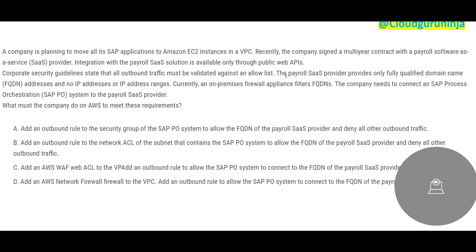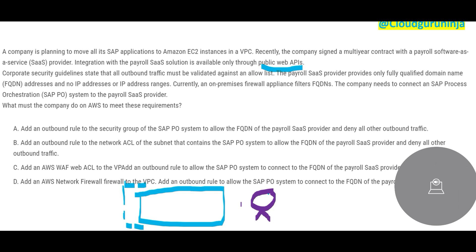Next question: a company is moving all their SAP applications to AWS EC2, and obviously it has to be inside a VPC. There is a third-party payroll application, and this SAP system needs to integrate with it using a public web API. The third-party payroll application needs to talk to the SAP system using APIs.